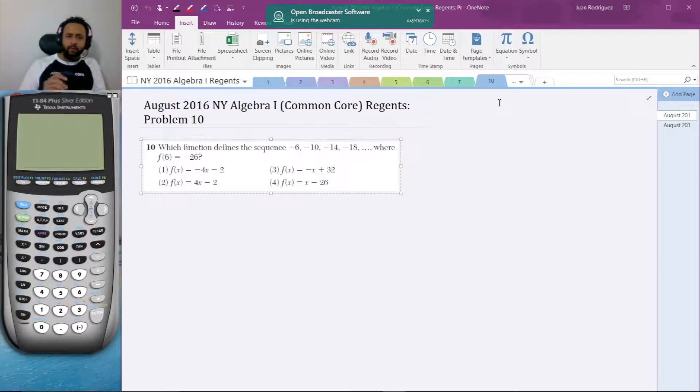Here's the problem: which function defines the sequence negative 6, negative 10, negative 14, negative 18, dot dot dot, where f of 6 is equal to negative 26? Choice 1: f of x equals negative 4x minus 2. Choice 2: 4x minus 2. Choice 3: negative x plus 32. Choice 4: x minus 26.